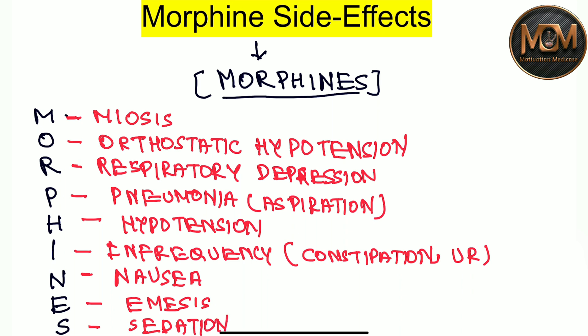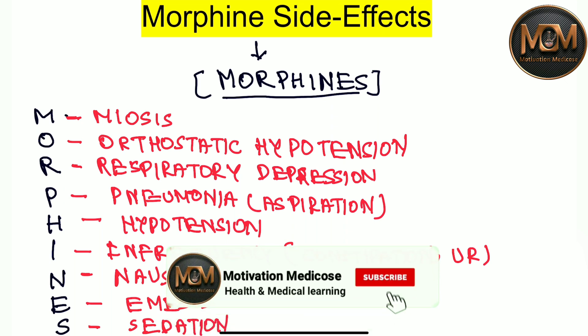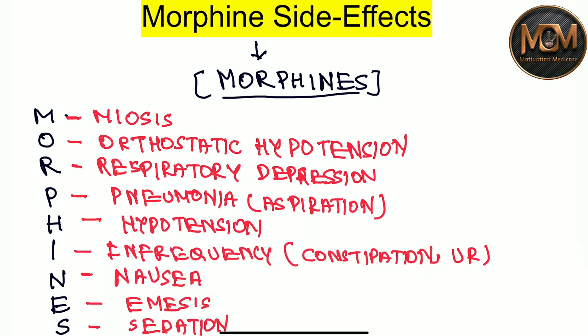So with the help of morphine's mnemonic itself, we can easily learn the side effects of morphine. Just consider all the letters in the word morphine and write out the full form for each. I hope this video has given you a good understanding of the side effects of morphine. As always, thanks for watching.